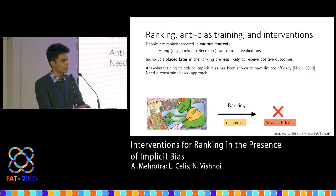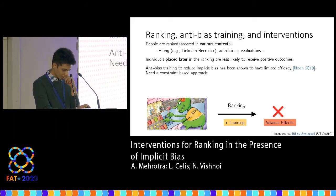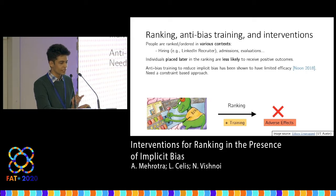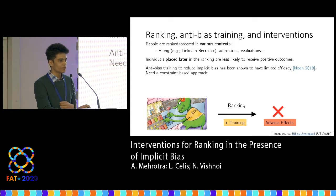We specifically look at these adverse effects in the ranking problem, where we have to select a subset of candidates and order them in decreasing order of their utilities. Such ordered lists of candidates have applications in various settings — for example, when you are hiring someone for a job or when you are admitting candidates to a university. In such ordered lists, candidates placed later in the ranking are less likely to receive positive outcomes such as being called for an interview.